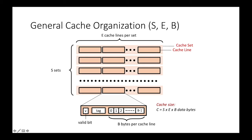Cache is organized in a hierarchical fashion. It consists of one or more sets, and each cache set consists of one or more cache lines. Each cache line contains a certain number of bytes — for example, 64 bytes on modern Intel CPUs — along with valid bits and tag bits. Therefore, total cache size is the number of sets times the number of cache lines per set times the number of bytes in each cache line.